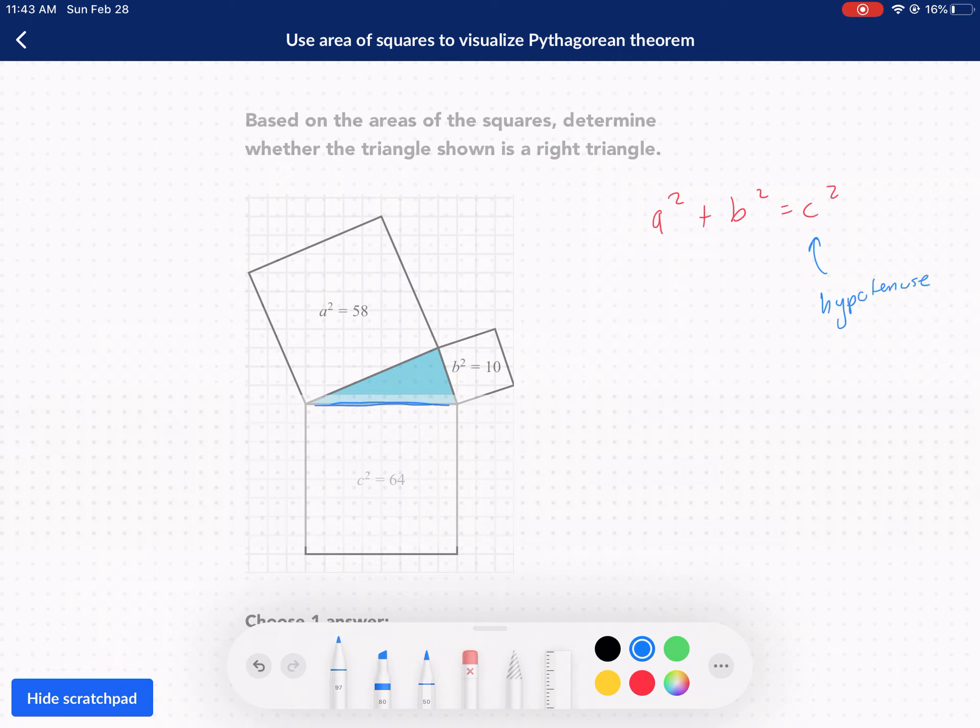In this triangle, this blue side looks like the longest side. It always has to be opposite your ninety degree angle. Now we don't know if this is actually a right triangle or not, so we're going to have to apply it. We're going to say is 64 squared equal to 10 squared plus 58 squared. I'm going to do 10 squared plus 58 squared and that gives me 3,464. Now we need to see if that's equal to 64 squared.